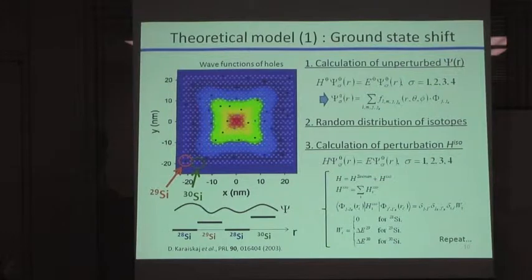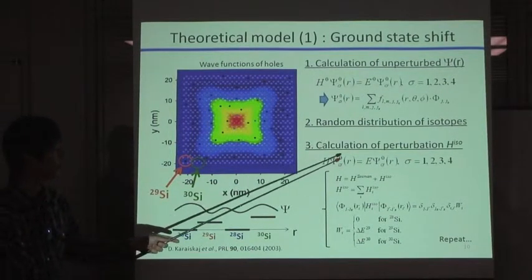And now, we have the local ground state shifting on each lattice point, like this. And also, we have the local existing probability on each lattice point, like this. And then, we calculated the isotopic perturbation Hamiltonian.